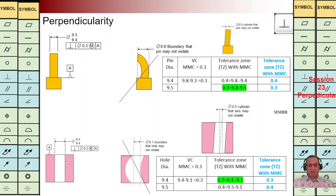As we can see at bottom left, the hole diameter is going to change between 9.4 and 9.5. We have the perpendicularity symbol, we have the diameter symbol, TZ is 0.3, and we have a modifier. The axis of this hole should be perpendicular to reference plane A. As we can see at bottom middle, we are going to have a cylinder with a diameter of 0.3.